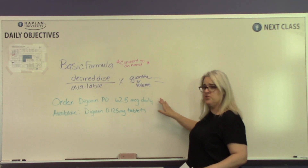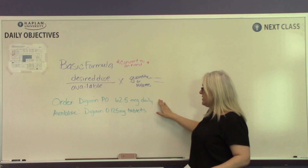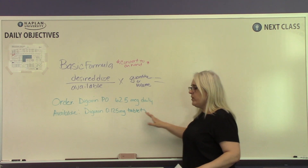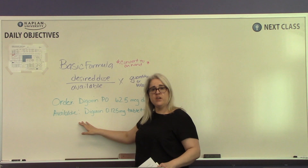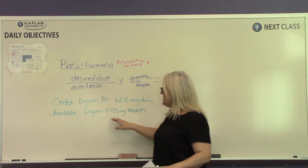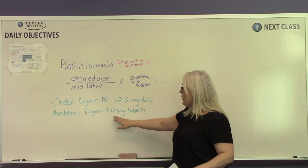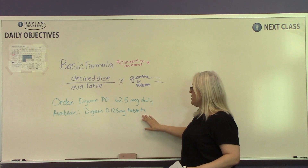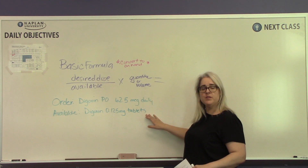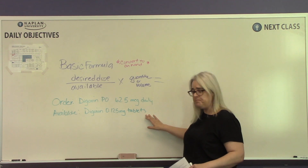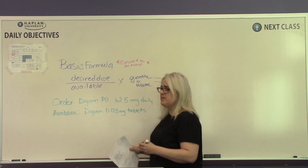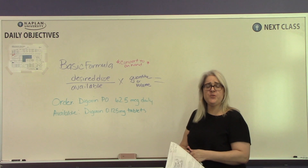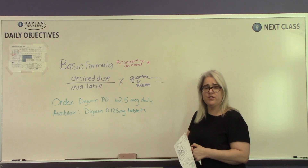For this first problem, the physician order is for digoxin orally 62.5 micrograms daily. What do we have available — what has the pharmacy sent us? Digoxin 0.125 milligram tablets. We need to figure out how many tablets we will be dispensing to the patient. The first step for this problem, and for every problem, is to think: do I need to do a conversion?